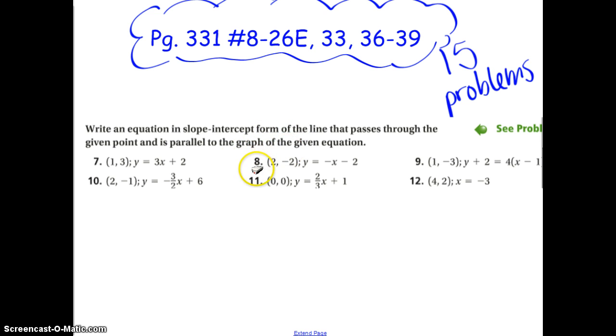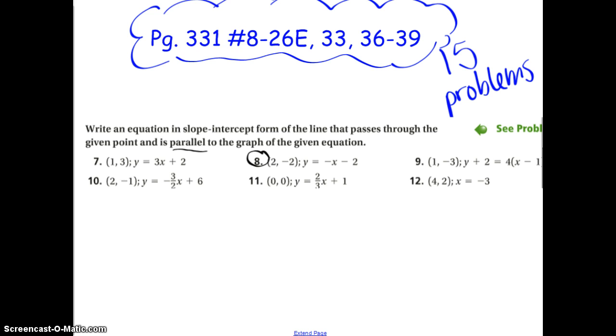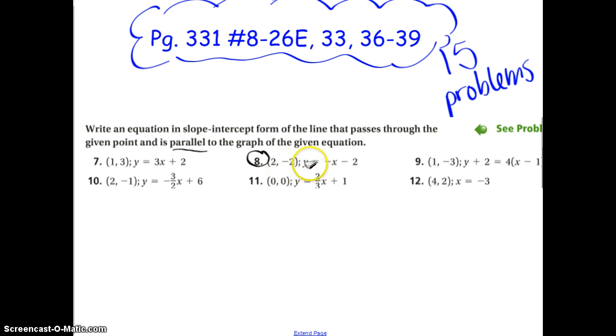Let's start at number 8. So I'm going to read the directions: write an equation in slope-intercept form of the line that passes through the given point that is parallel to the graph of the given equation. Okay, so here's number 8, let's start there. So I'm going to look, first thing I do is find the slope. So the slope is always attached to the x, there it is. Well, what number goes there? Yeah, 1.